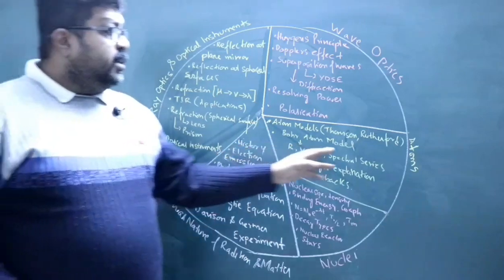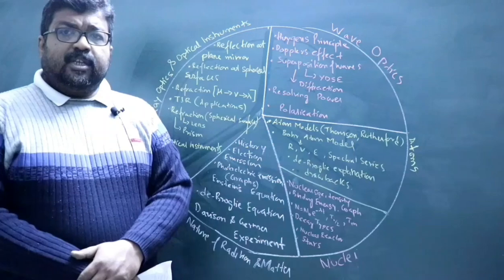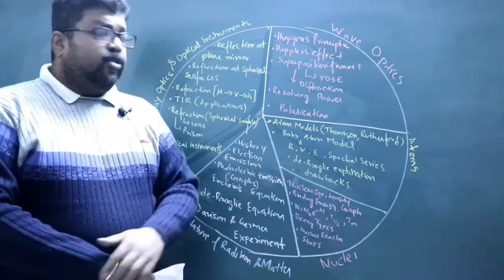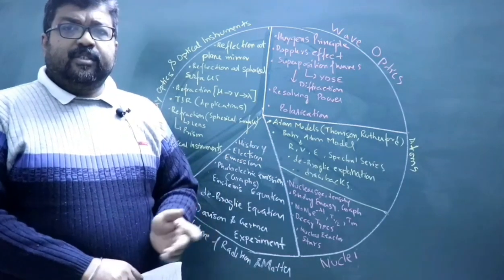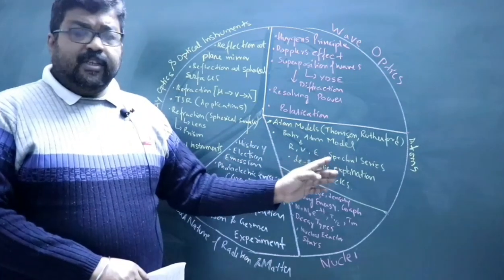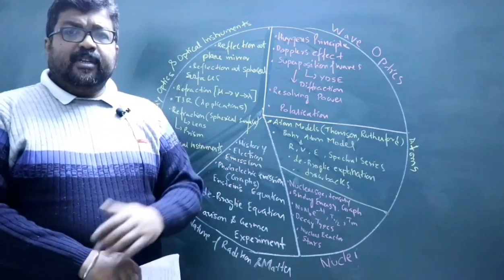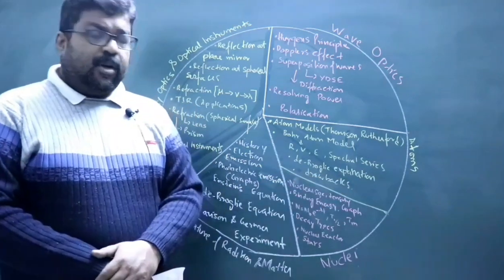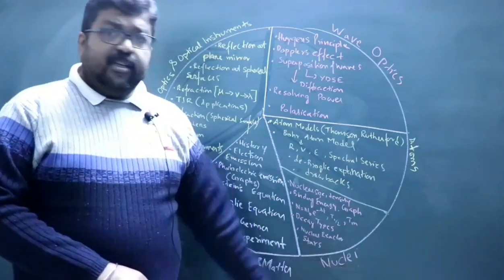Then in the chapter Atoms, the various atom models as suggested by Thomson and Rutherford, and the drawbacks of these models. Then the Bohr atom model, the Bohr postulates, the Bohr quantization condition, expressions for radius, velocity, energy - potential energy, kinetic energy, and total energy. Discussion of the spectral series, the first line of spectral series, the limiting line of spectral series. Then the de Broglie explanation of the Bohr atom model and the drawbacks of the Bohr atom model.